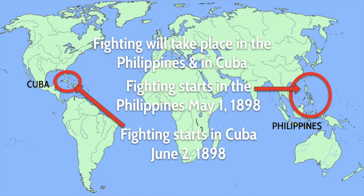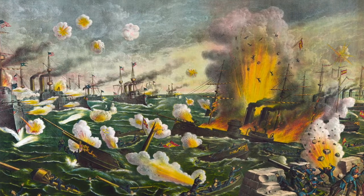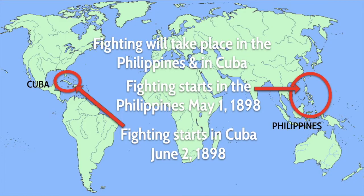So where is the fighting going to take place in the Spanish-American War? It actually takes place in two main places. The fighting actually starts in the Philippine Islands on May 1st, 1898 — the Philippines was another colony of Spain. Prior to the start of the war, the United States Navy made its way closer and closer to the Philippines in anticipation of war. On May 1st, 1898, Commander Admiral Dewey attacked the Spanish fleet in Manila Bay in the Philippines and basically wiped them out pretty quickly, holding the Philippine Islands until American troops arrived. The fighting in Cuba doesn't start until June 2nd, 1898.